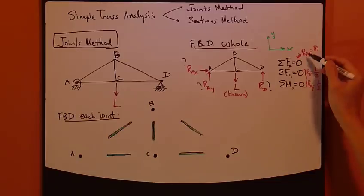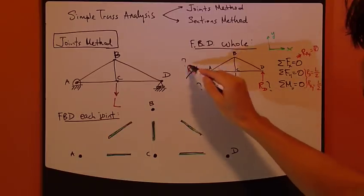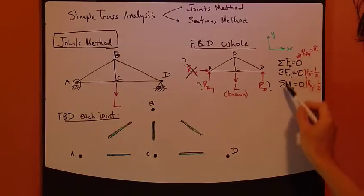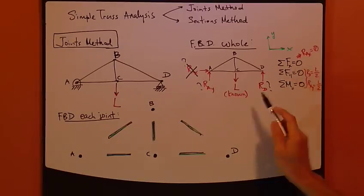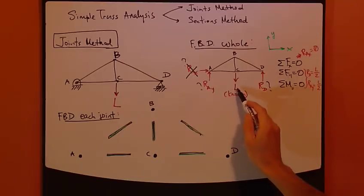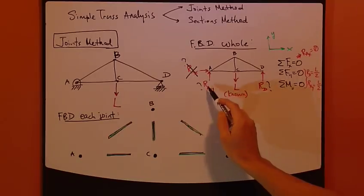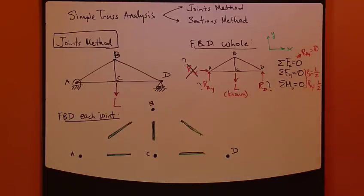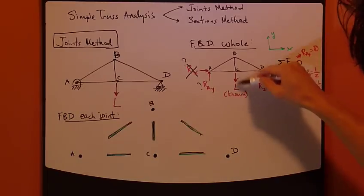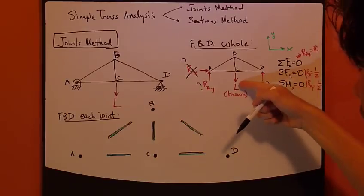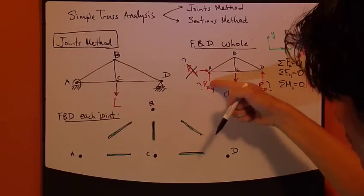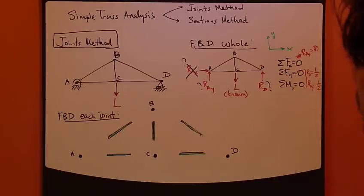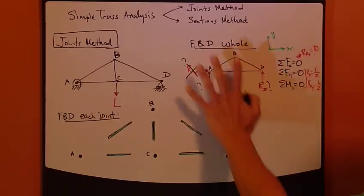We have three unknowns and three equations — no problem. The first equation immediately gives Rax = 0. Solving the three equations together gives Rd = L/2 and Ray = L/2. That makes perfect sense: if L is, say, 100 newtons, 50 will be shared at each support, so the whole truss is in equilibrium.